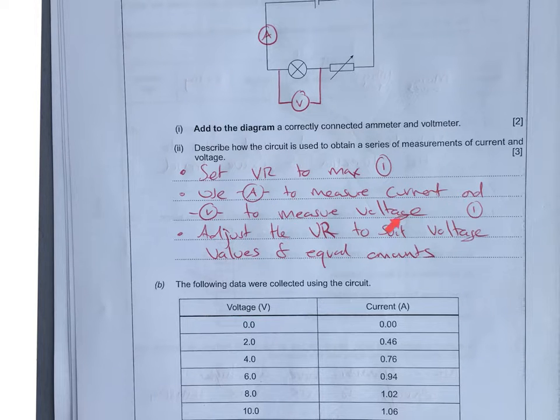You're going to use the ammeter to measure the current and the voltmeter to measure the voltage. You're going to get a mark for that. Then finally you're going to adjust the VR incrementally or to suit the voltage values of equal amounts.